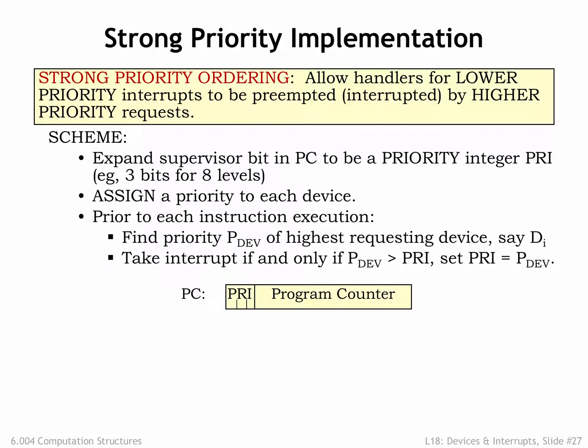We'll need to make a small tweak to our beta hardware to implement a strong priority system. We'll replace the single supervisor mode bit in PC31 with a 3-bit field in PC[31:29] that indicates which of the 8 priority levels the processor is currently running at.